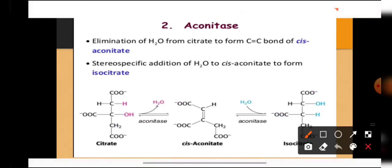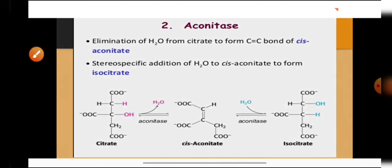In the second step, citrate loses water in the presence of enzyme aconitase to form cis-aconitate, and then cis-aconitate undergoes a stereospecific addition of water in the presence of the same enzyme to form isocitrate.